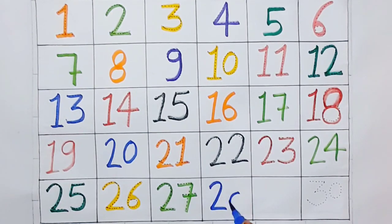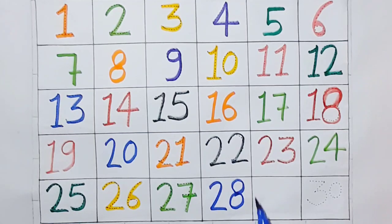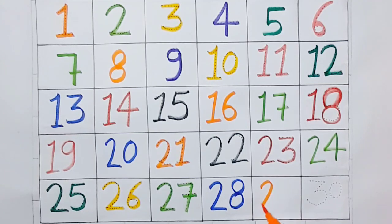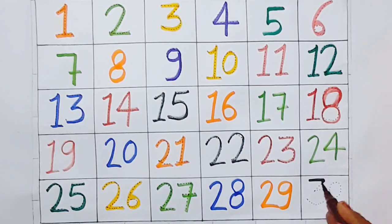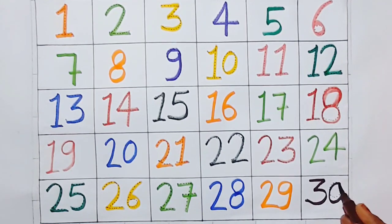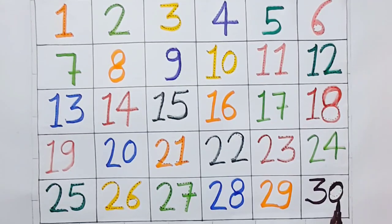Twenty eight. Twenty nine. Thirty — this is thirty.